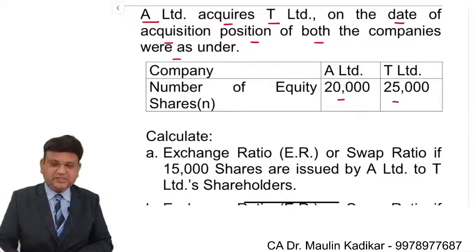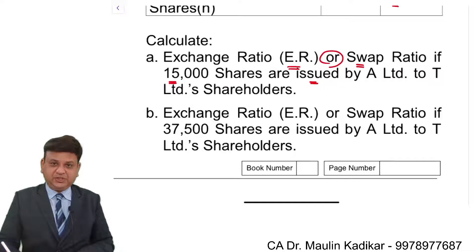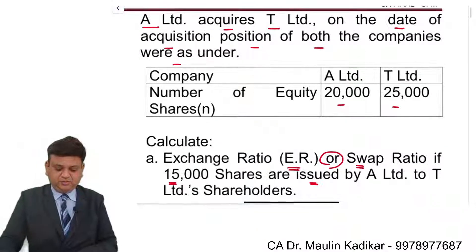Number of equity shares are given 20,000 and 25,000. The question says calculate the exchange ratio or swap ratio if 15,000 shares are issued by A Limited to T Limited shareholders. And in the second question, calculate the exchange ratio or swap ratio if 37,500 shares are issued by A Limited to T Limited shareholders.